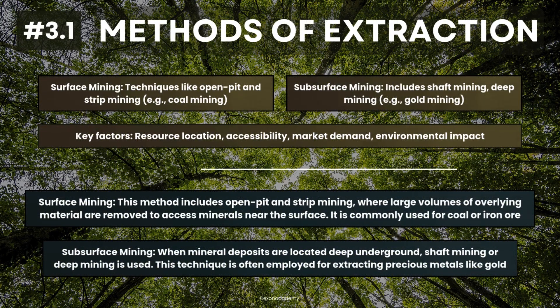Slide 3.1. Methods of extraction. After learning how rocks form, we move on to how we extract these valuable resources. There are two primary methods. Number one, surface mining: this method includes open pit and strip mining, where large volumes of overlying material are removed to access minerals near the surface. It is commonly used for coal or iron ore. Number two, subsurface mining: when mineral deposits are located deep underground, shaft mining or deep mining is used, often employed for extracting precious metals like gold. The choice of mining method depends on the location and depth of the resource, accessibility, market demand, and potential environmental impact.